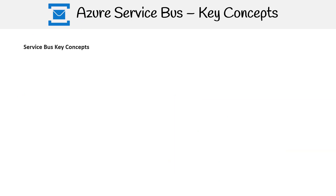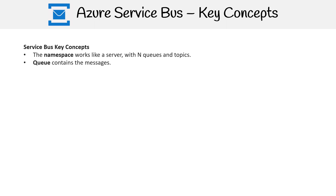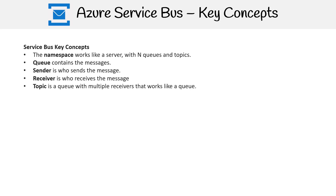Service Bus Key Concepts. The namespace works like a server with end queues and topics. Queue contains the messages. Sender is who sends the message. Receiver is who receives the message. Topic is a queue with multiple receivers that works like a queue. Subscription is a receiver in a topic.